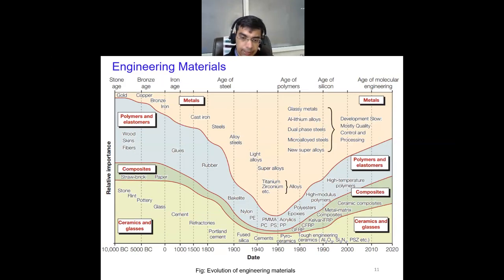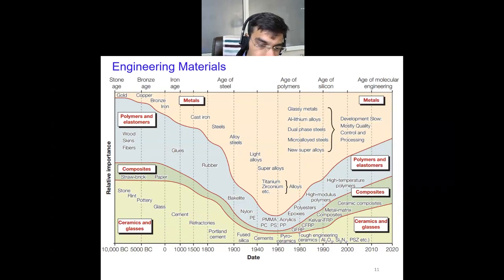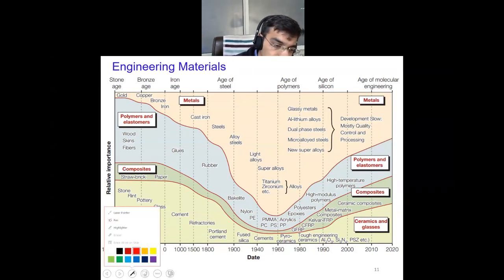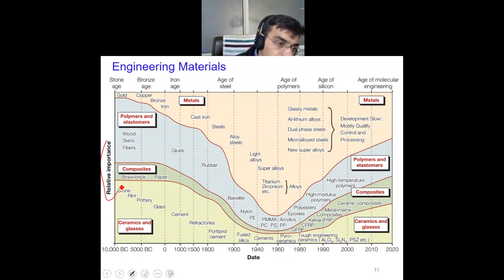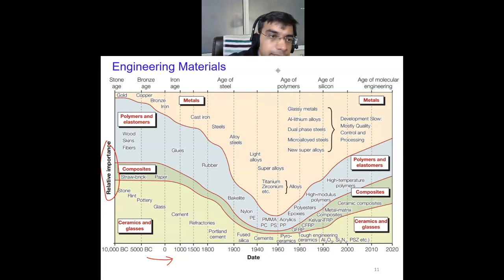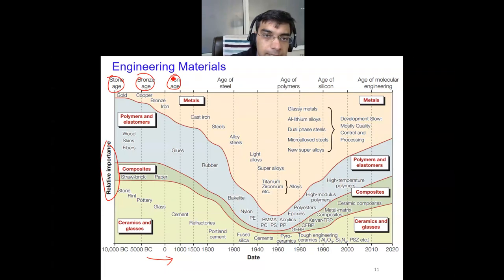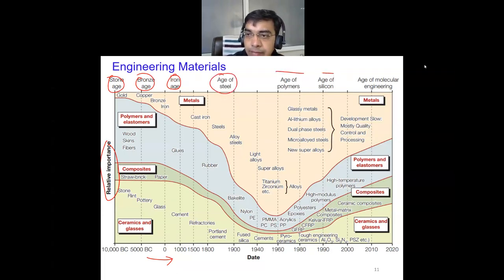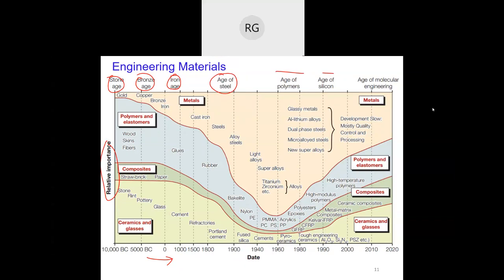I'll just start with this slide again. This slide basically tells us about the evolution of engineering materials — how the importance of these materials changed with progress in human civilization. Different ages are classified like the stone age, bronze age, iron age, age of steel, polymer, silicon, and then we have the last one, which is the age of molecules.